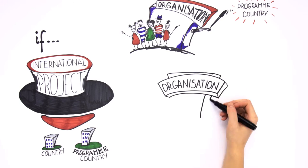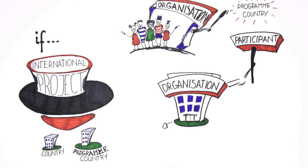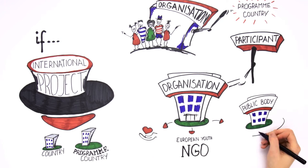A participating organisation can be a non-profit organisation, an association, an NGO, European youth NGO, or public body at local or regional level.